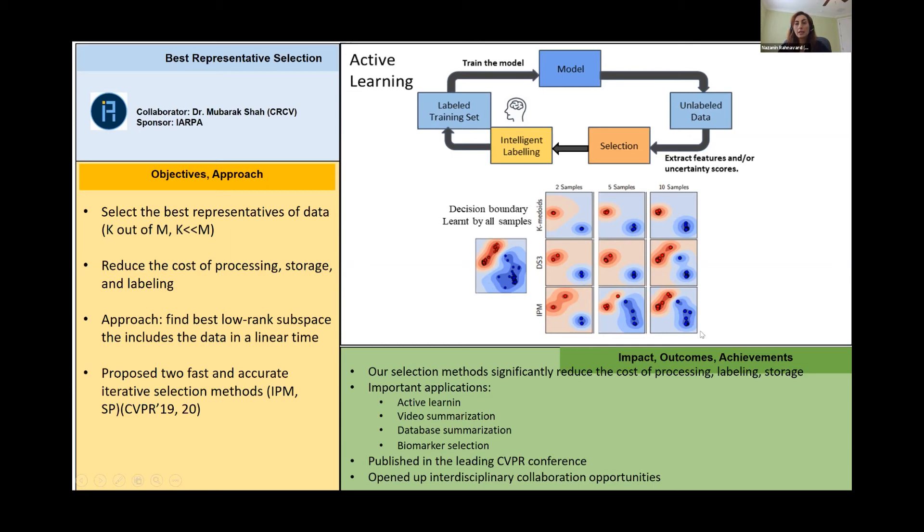This is an example that we showed of two classifiers trained on all the data, all the labels. And here is a scheme with only using 10 labeled data, and compared to other methods, the decision boundary here for our case is much closer to the decision boundary of when we had access to all the labels.